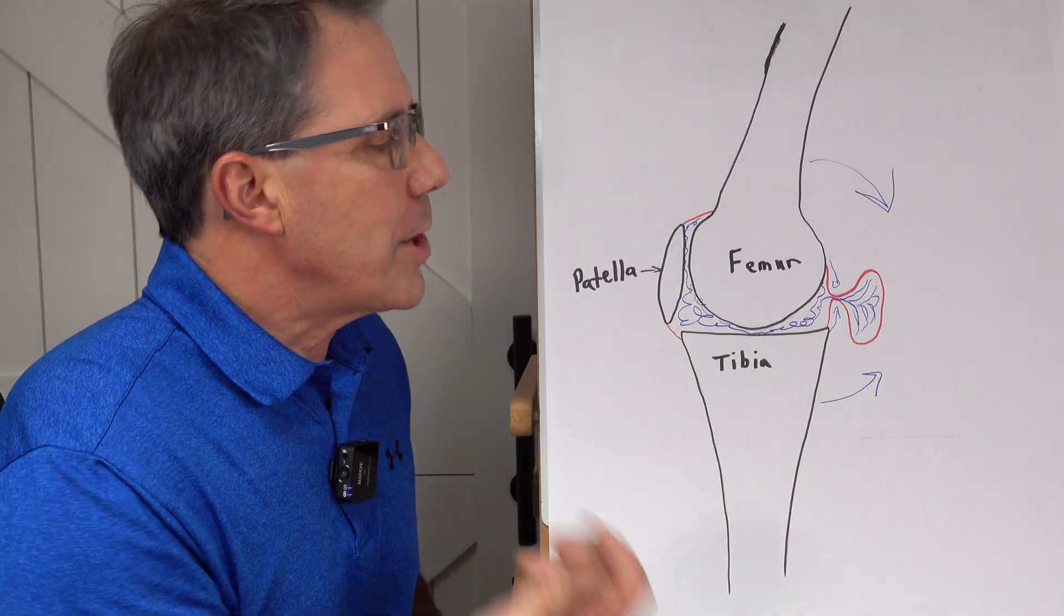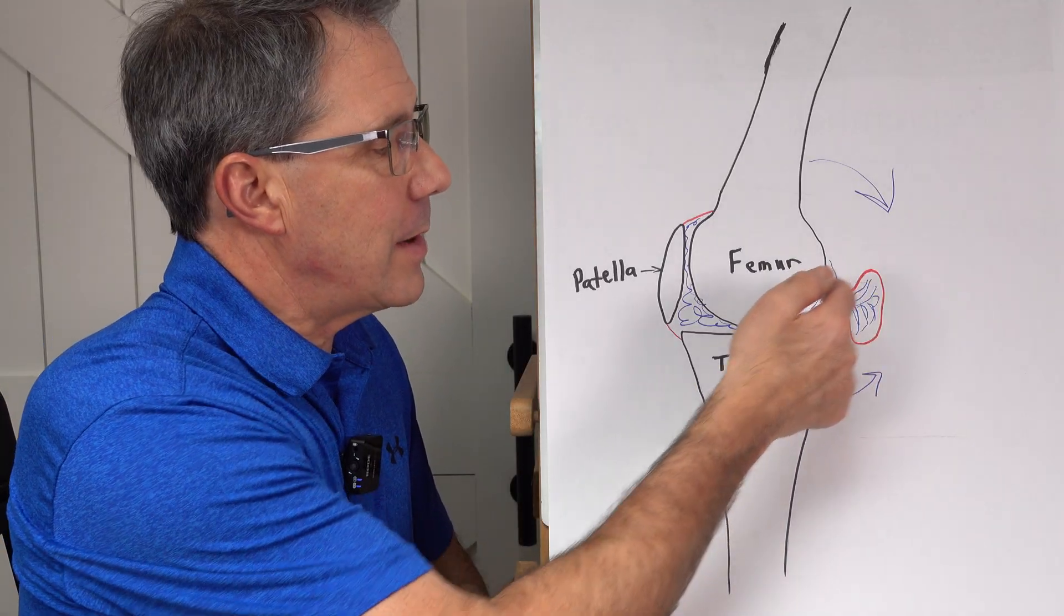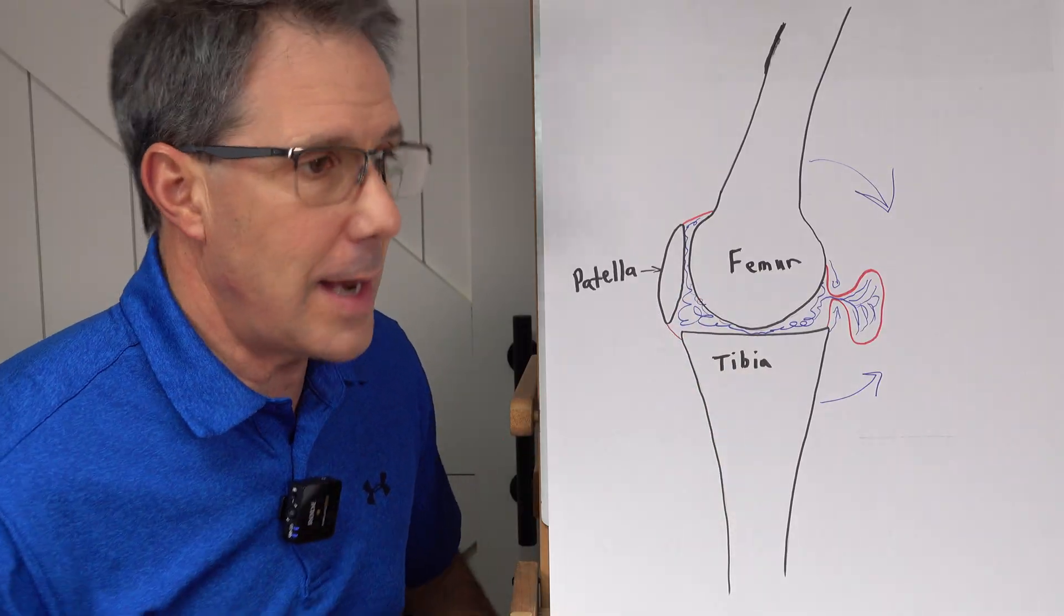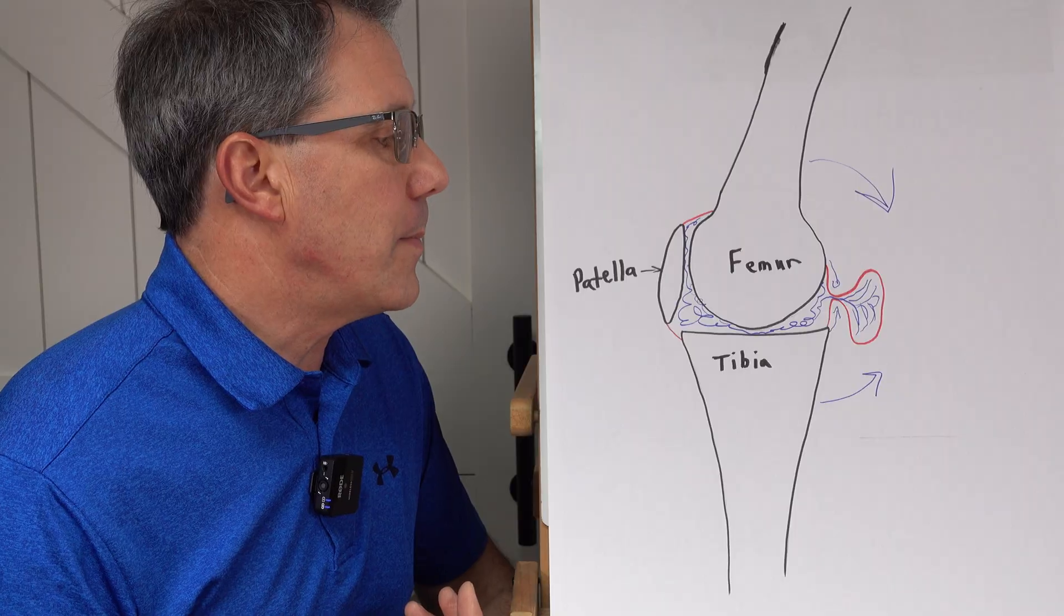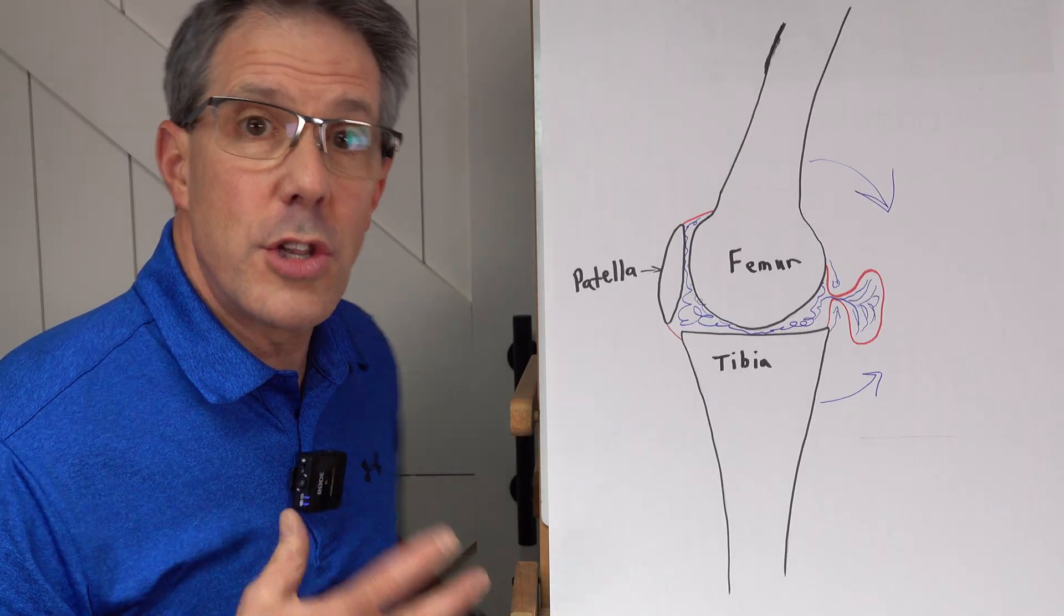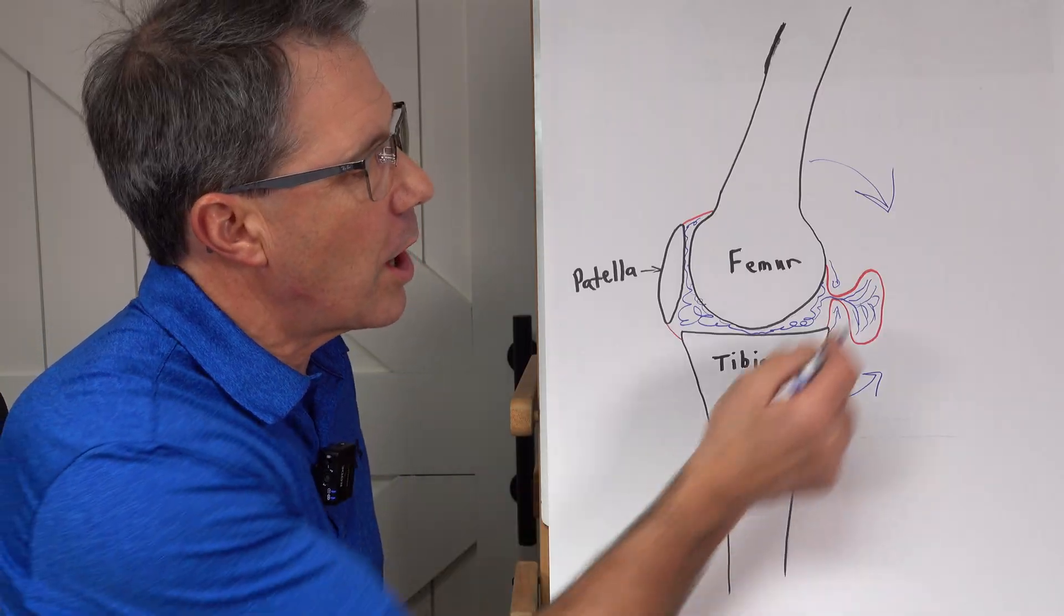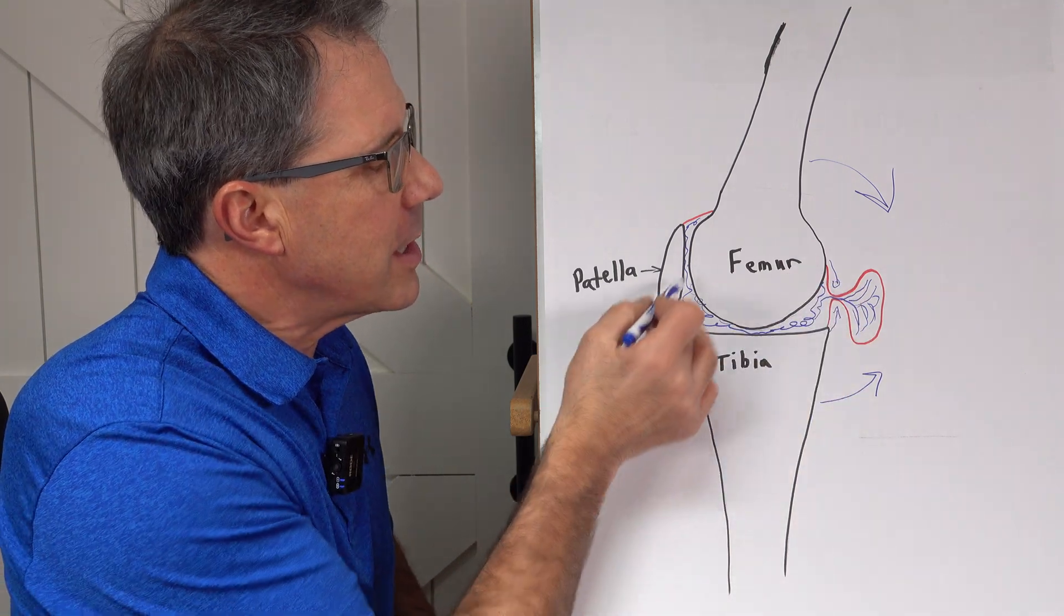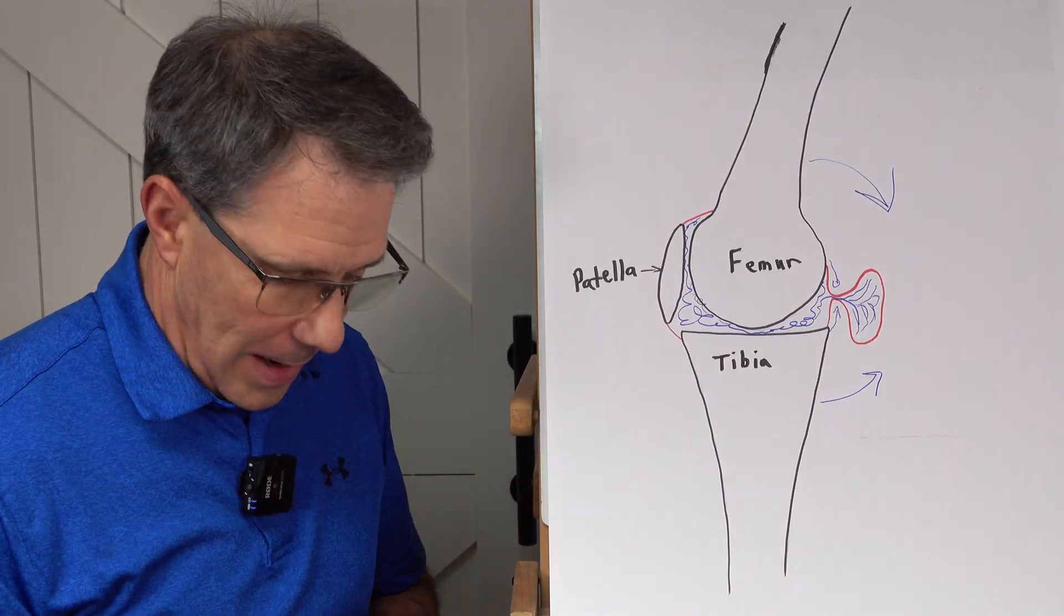So what we should try to do early on to try to decrease this pressure back here is do things that decrease the swelling inside our knee joint, like taking an anti-inflammatory if you can, as long as your provider prescribes it, taking a little bit of pressure off your knee, not twisting and pivoting, maybe trying to avoid squatting really deep so we're not causing an irritation to these tissues over here. Anything to decrease that irritation to the inside of the joint can help settle that down.